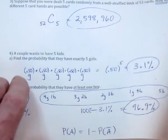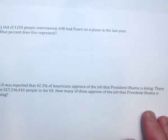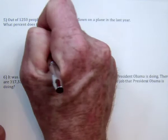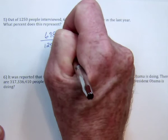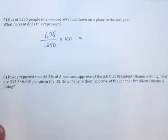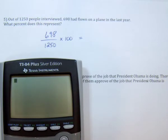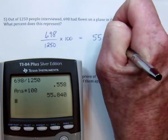On to the second page. This one is pretty easy and straightforward — you just divide. If it is 698 out of 1,250 people interviewed and I want to know a percent, multiply by 100. 698 divided by 1,250 — in decimal form it would look like that, or in percent: 55.84%.